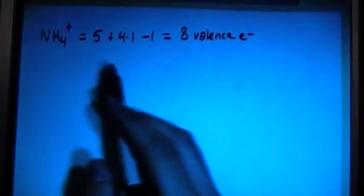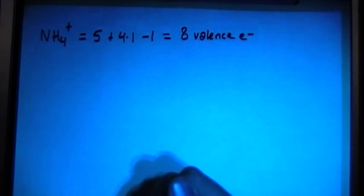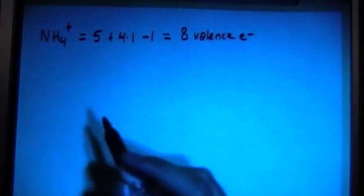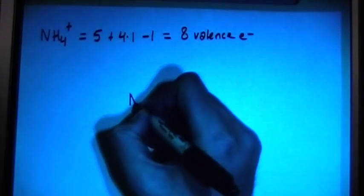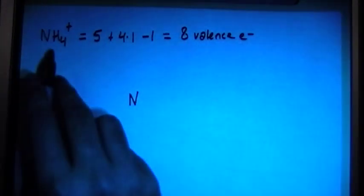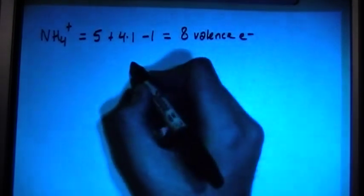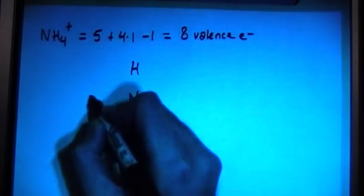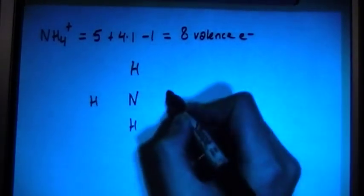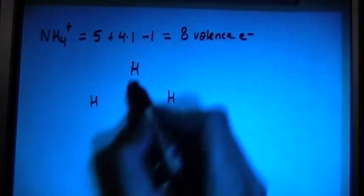Because it's hydrogen, we can't really do the little trick that I typically do for Lewis structures. So let's just go ahead and try to draw this out. You have nitrogen in the center, because hydrogens cannot be the central atom, and you have 4 hydrogens.